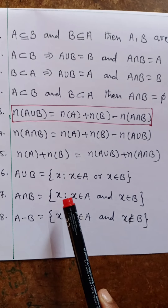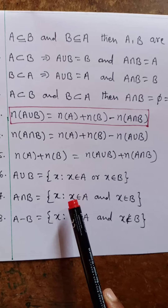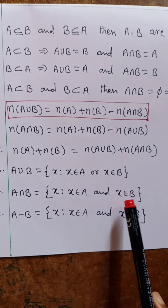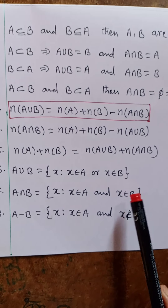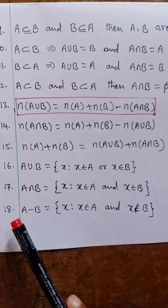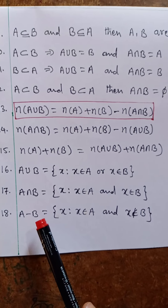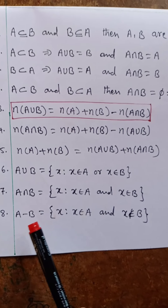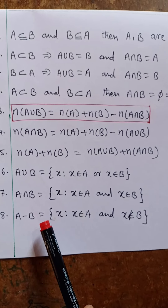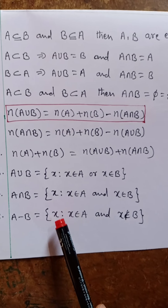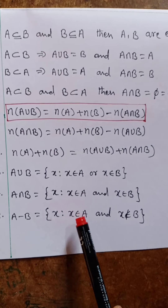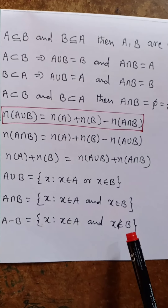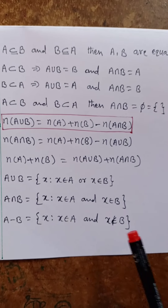Set builder form of A intersection B equal to {x such that x belonging to A and x belonging to B}. Eighteenth one: A minus B — set builder form of A minus B equal to {x such that x belonging to A and x not belonging to B}.